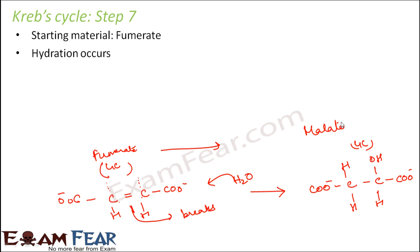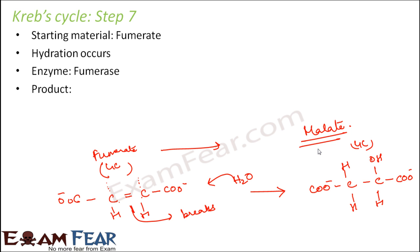What is formed is again a four-carbon compound known as malic acid or malate. Malic acid is formed from fumarate by hydration, and the enzyme involved here is fumarase. The product formed is malic acid or malate.